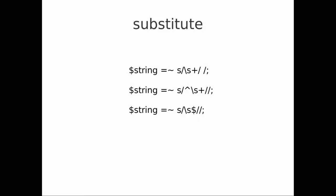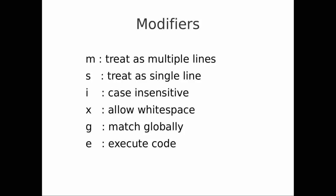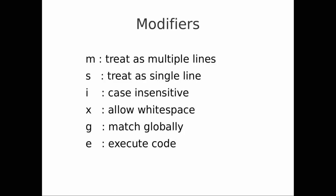There are some modifiers we can apply to regular expressions, just like in other languages. We can treat a whole file as multiple lines with the 'm' modifier, matching each newline as a line break. With '/s' we treat the string as a single line so a period matches a newline. We can do case-insensitive searches with '/i', allow white space in patterns with '/x', match globally with '/g', and execute code with '/e'. The two you'll use most frequently are case-insensitive searching and global matching.